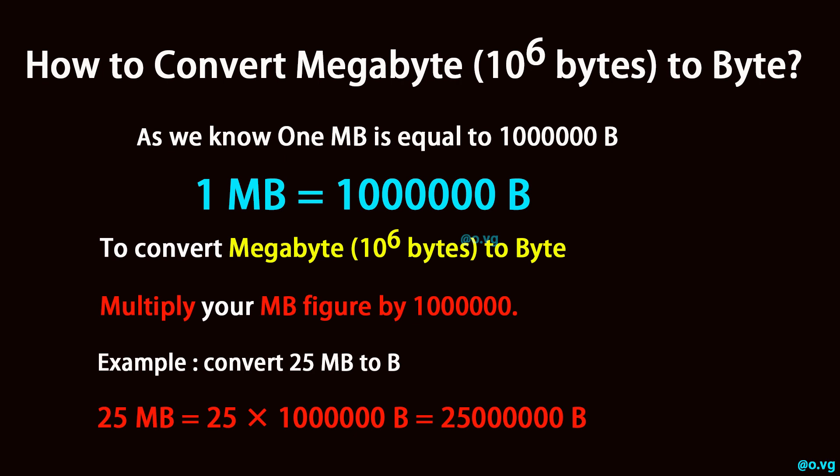Example: convert 25 megabyte (10^6 bytes) to byte. 25 megabyte (10^6 bytes) equals 25 times one million bytes, which equals 25 million bytes.